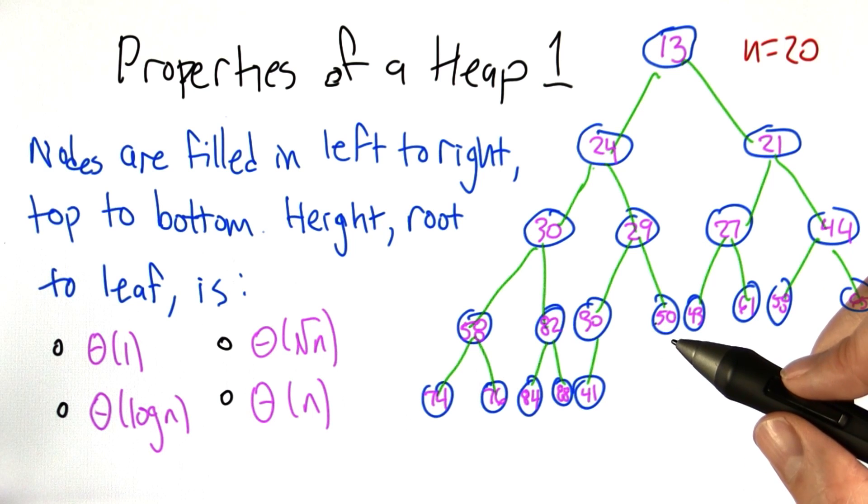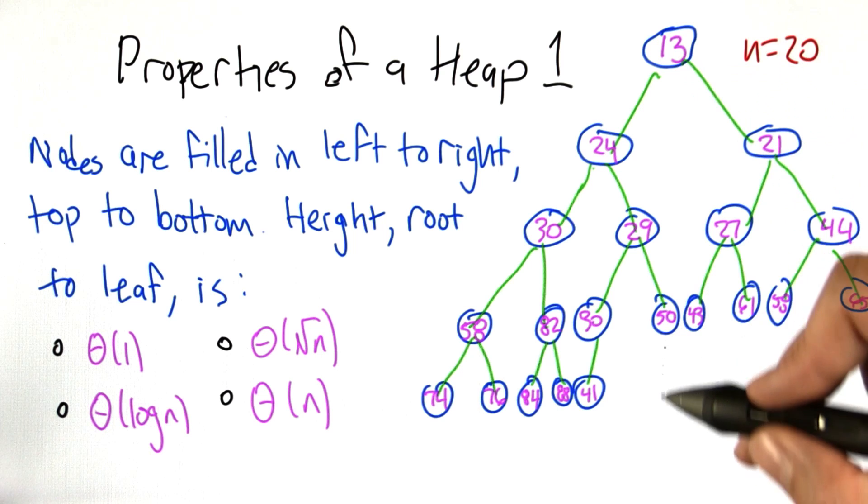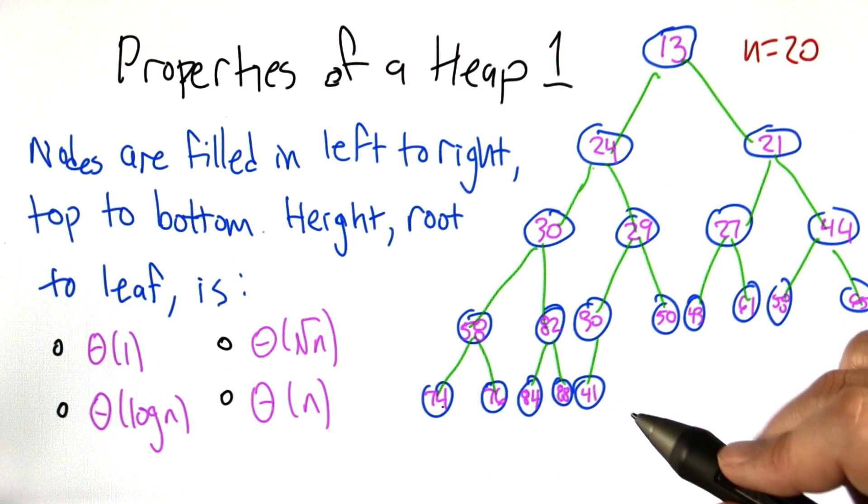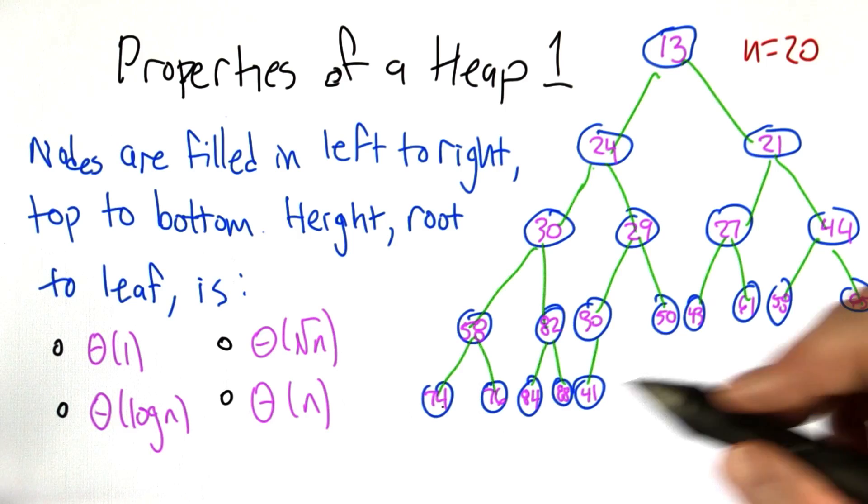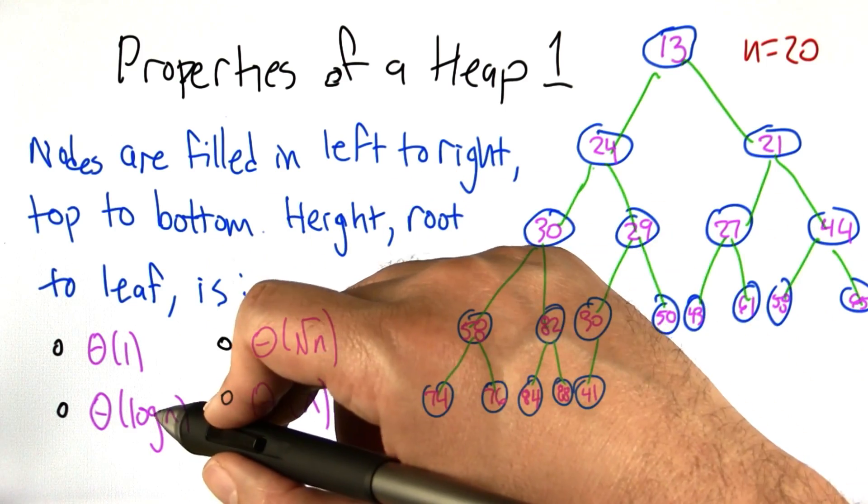And given that that's how we do it, what is the height from the root of the tree, the tippy top, down to the deepest leaf? How long are the longest paths in this heap? Is it their constant depth, square root depth, logarithmic depth, or as bad as linear depth?